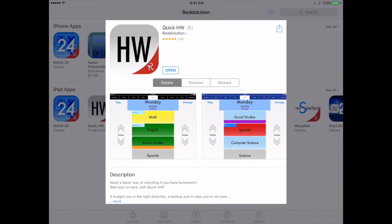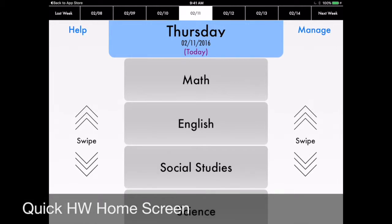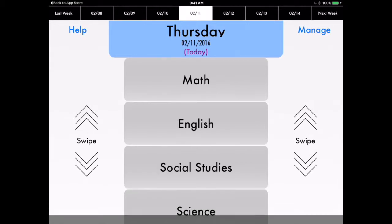I already have the app downloaded, so I'm going to go ahead and open it. This is your home screen. It takes you to the current day. Today is Thursday that I'm recording this. It's going to have a set of classes already in there, but you're going to need to manage it so you can customize based on your schedule.